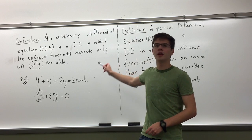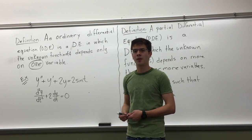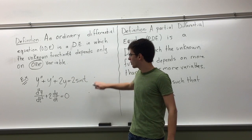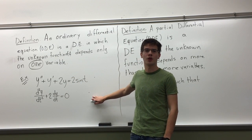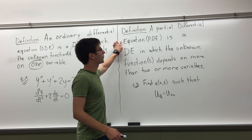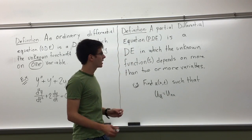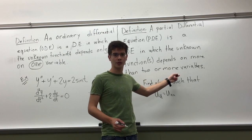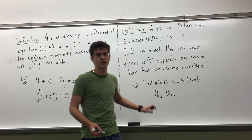An ordinary differential equation is a differential equation that depends on only one variable. These two are examples of ordinary differential equations. A partial differential equation is a differential equation that depends on two or more variables, and this is an example of a partial differential equation.